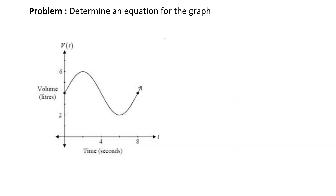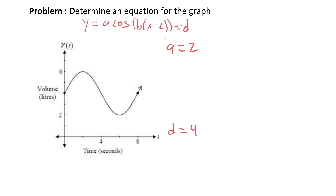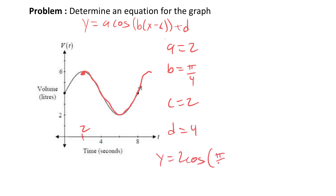Let's look at this one again, but this time I want you to solve the equation using cosine only — even though it looks like a sine function. The a value and d values stay the same, using the top and bottom formulas. b gives you pi over 4. But c is where you have to get creative. This point here is probably where the cosine graph would start, and it looks like a c value of 2. So the equation would be y equals 2 cosine (pi over 4)(x minus 2) plus 4.